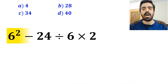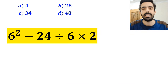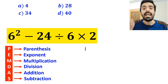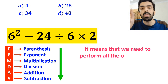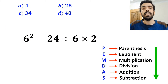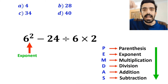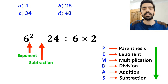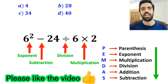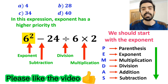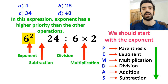Now let me show you how to solve this expression properly. To solve this problem, we must follow PEMDAS, meaning we perform all operations in order from top to bottom. As you can see on the screen, in this expression, first we have an exponent, then a subtraction sign, followed by a division, and finally a multiplication. We should start with the exponent, because it has higher priority than the other operations.